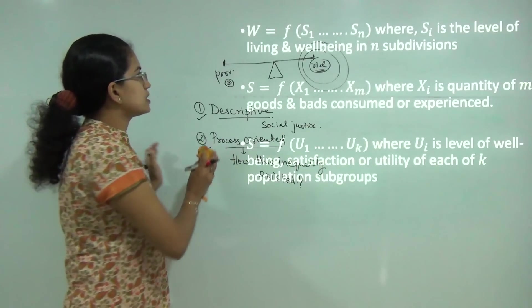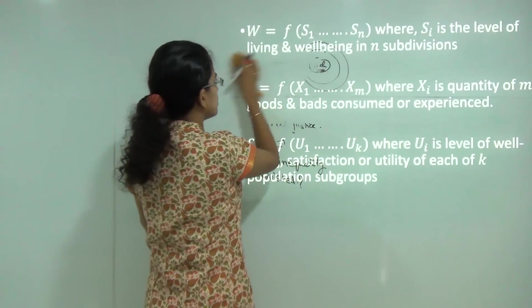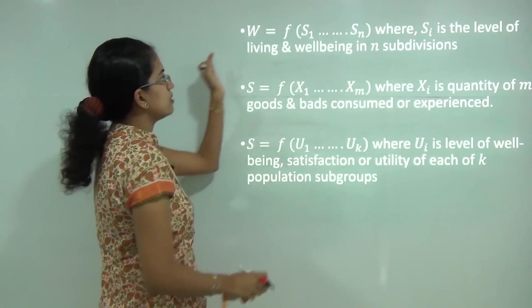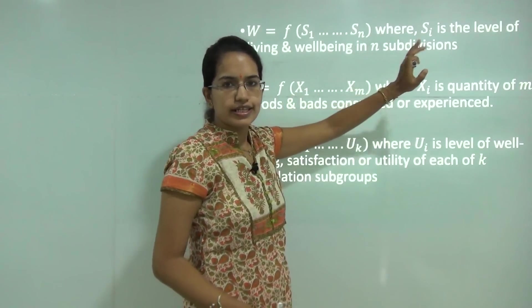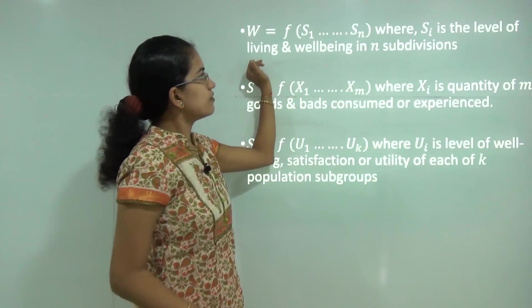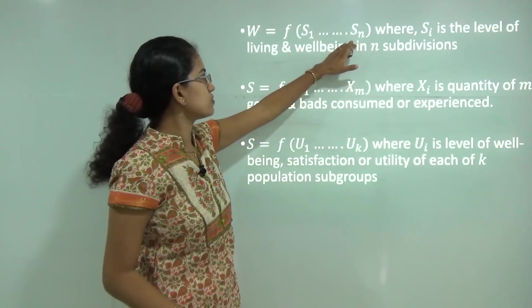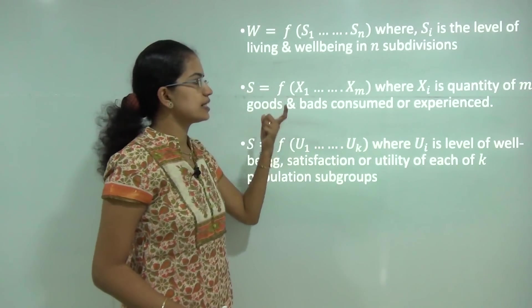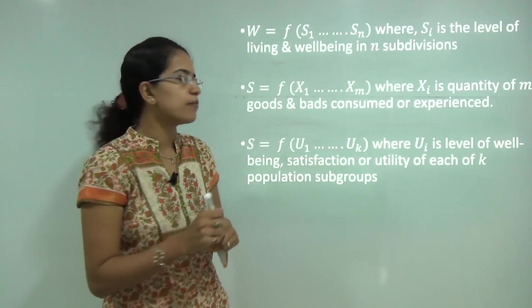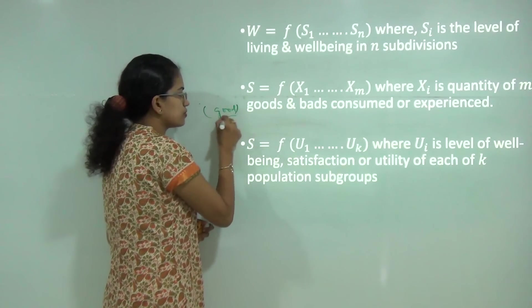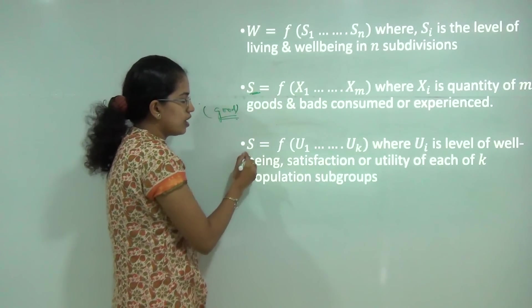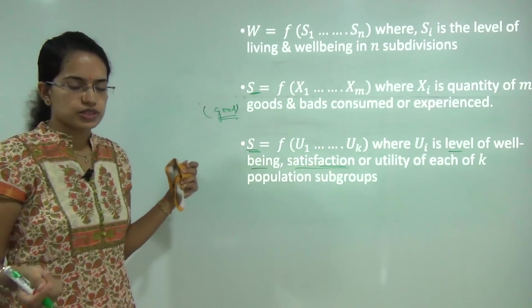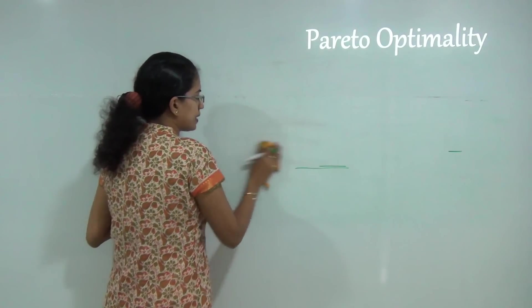To understand how welfare economics works, we consider well-being as a function of S1, S2, S3 up to Sn, where S is the level of living and well-being and n represents the various segments of society. Similarly, each S is a function of X1 to Xm, where X is the quality of goods and bads consumed or experienced by each person. Based on that, you indicate social well-being — the level of satisfaction that an individual or a group of society has.